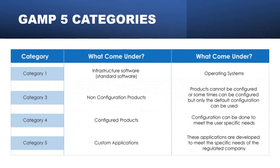In this slide, we will discuss the different GAMP5 categories. Category 1 is called infrastructure software, also called standard software or layer software. The software used to manage the operating environment comes under category 1. For example: Windows operating system, SQL, Oracle, C++, etc.